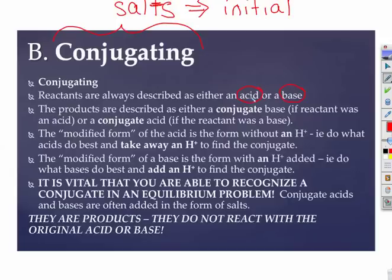When we talk about these, the reactants or the foundational acid or base are the reactants. The product that forms when acids do what acids do best is called a conjugate base. Bases, when bases do what they do best, which is accept an H⁺, they form a conjugate acid.